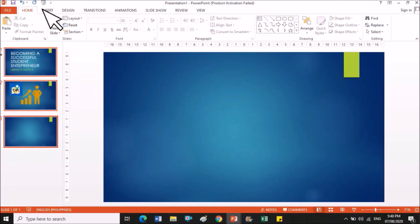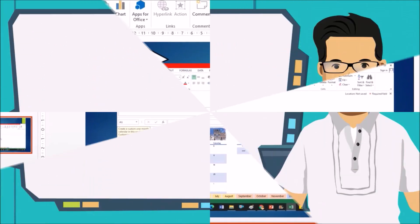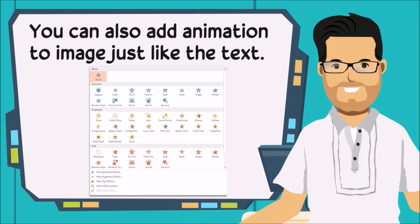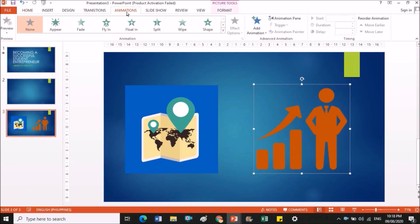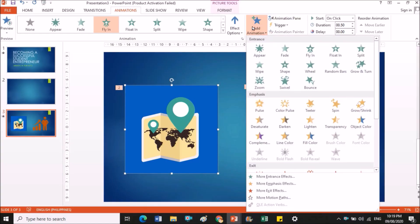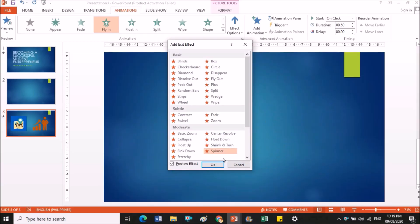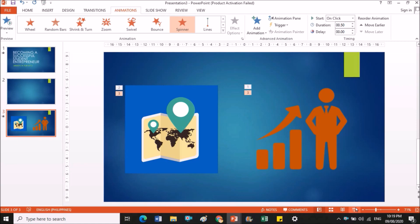Go to the Insert tab and click the Screenshot button. Choose the screen clip that you want to include on your slide. You can also add animation to the image just like you did on the text — you can add entrance, emphasis, and exit on the picture. Click the object, go to the Animation tab, and choose an animation style. You can add more animations if you want.